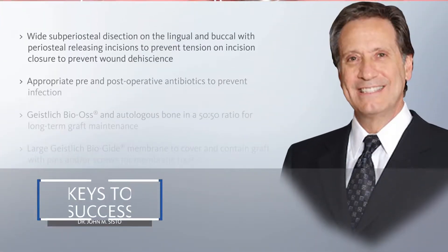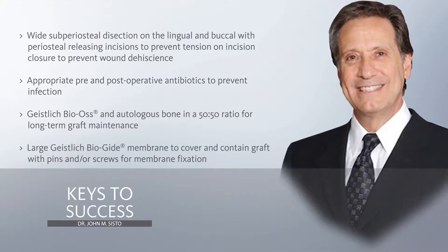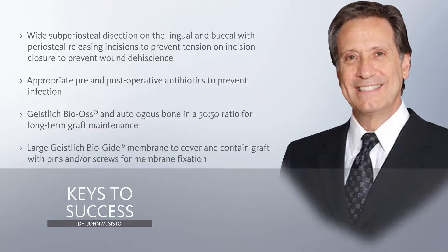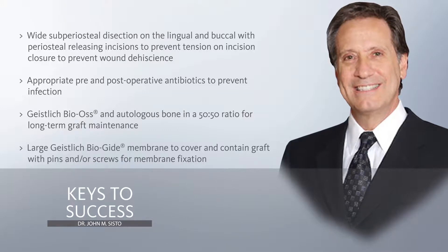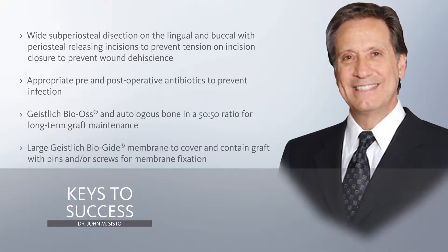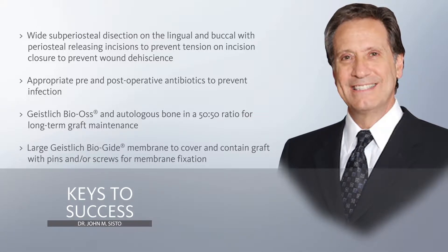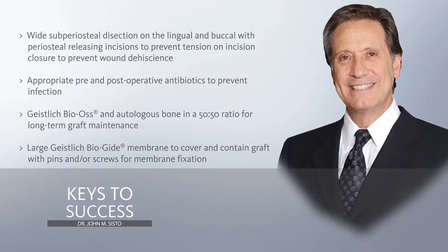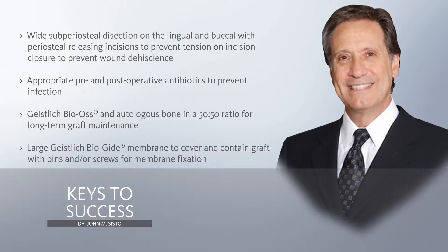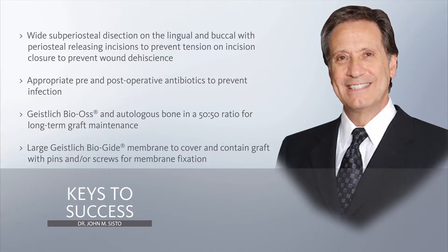Keys to success: a wide subperiosteal dissection of the lingual and the buccal flaps with periosteal scoring, followed by blunt dissection of the flaps to create flap mobility and to decrease tension on the incision. Appropriate pre- and post-operative antibiotics to prevent infection are also very important. The Geistlich BioOss small granule size with autogenous bone scraping and a 50-50 ratio provides bone grafting material that is not only osteogenic, but prevents loss of bone due to breakdown in the long term.